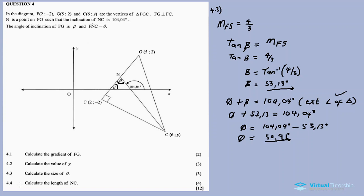Now for the last question, 4.4, calculate the length of NC. Looking at triangle FCN, we have a right angle triangle. It means trigonometric ratios can work because we also have the angle theta. I need the length of NC, which is the hypotenuse of this triangle FCN.